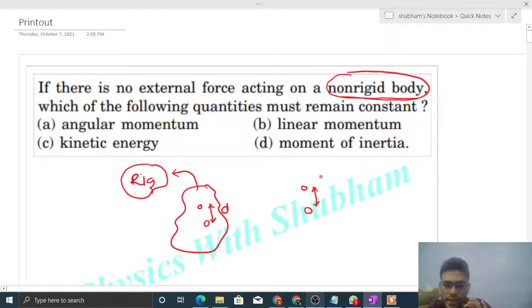So a non-rigid body is a kind of system where many particles can move relative to each other - a kind of system of particles, right?